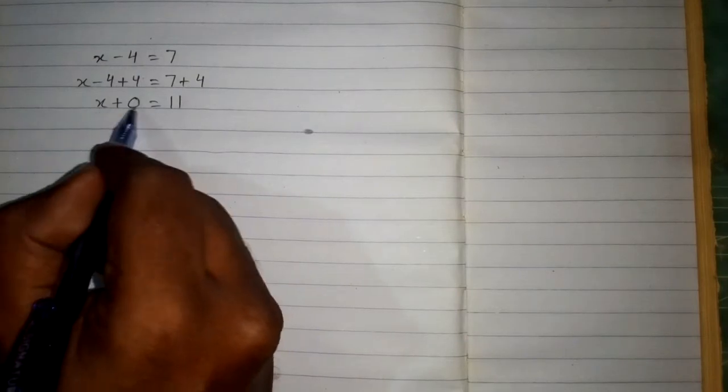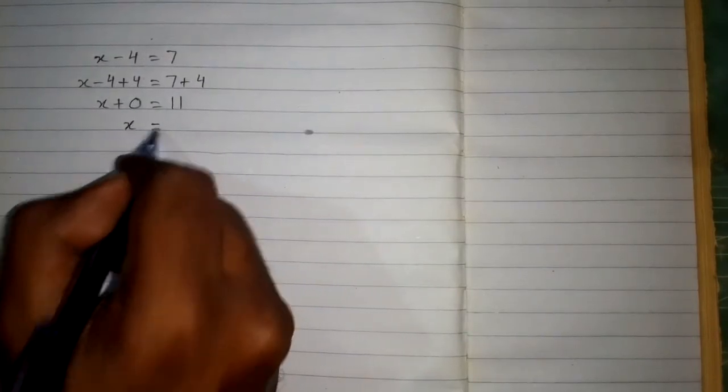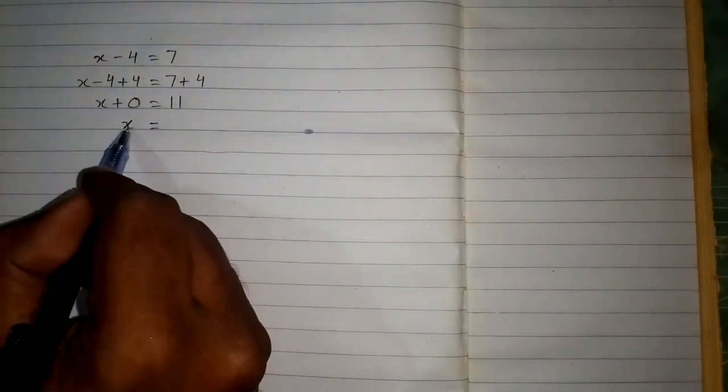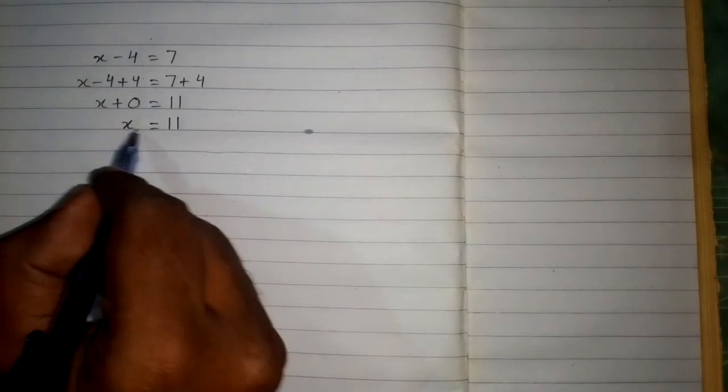When we add 0 to anything, we get the same thing. So x plus 0 equals x, and the value of x is 11.